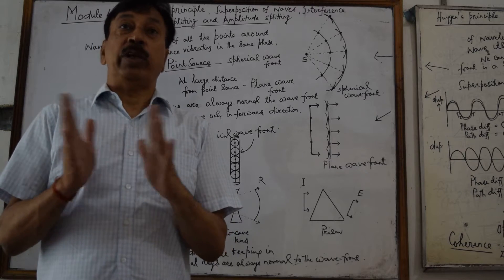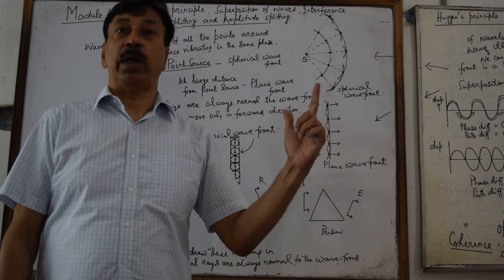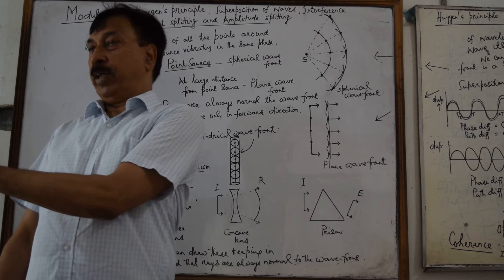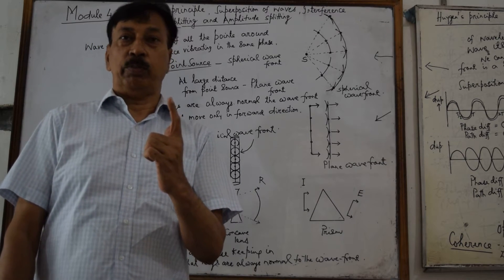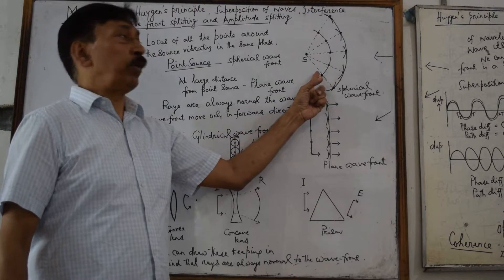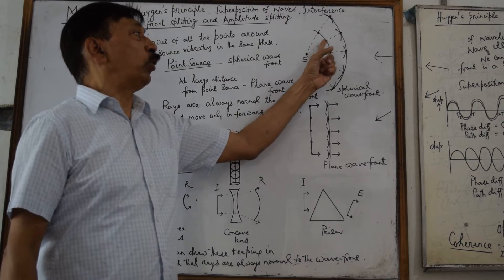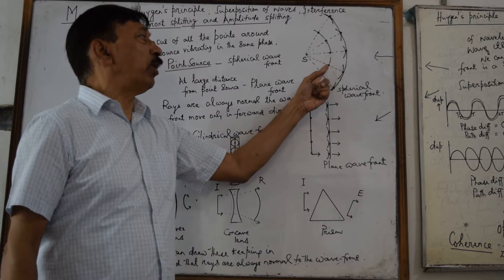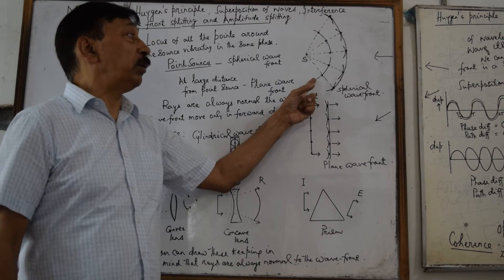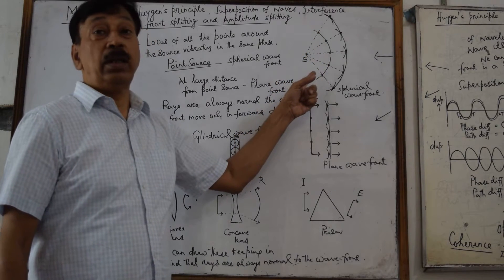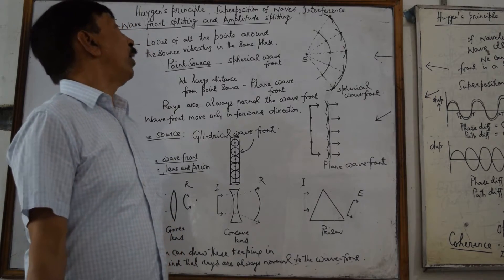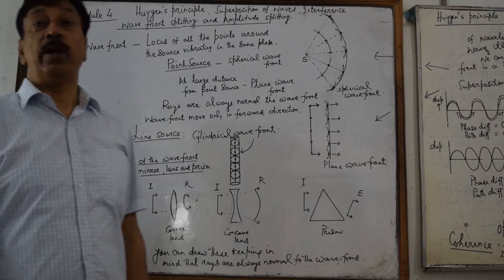In one complete oscillation, from our knowledge of simple harmonic motion, the phase travelled by the particle is 2π. Beginning from the mean position to the right extreme position is π/2, back to mean position is π, then left extreme position is 3π/2, back to mean position is 2π. So phase gives you the state of the particle. Since all the particles are at the same distance from the source and the speed of the wave is the same in all directions, all these particles will be vibrating in the same phase. The locus of these particles is a line, and this is what we call a wavefront — the locus of all points around the source vibrating in the same phase.